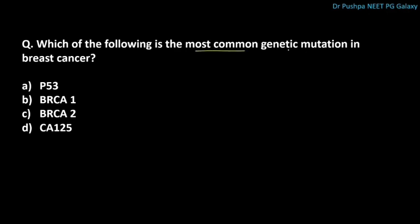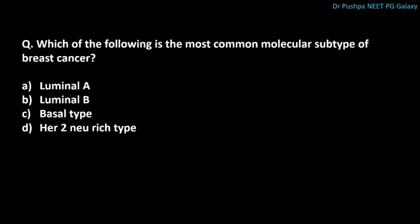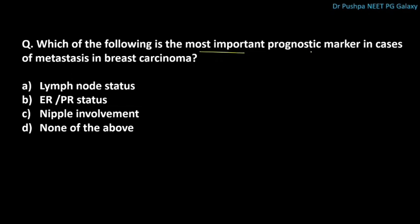What is the most common genetic mutation in breast cancer? The correct answer is P53. The most common familial genetic mutation is BRCA1. What is the most common molecular subtype of breast cancer? The correct answer is luminal A type. What is the most important prognostic marker in cases of metastasis in breast carcinoma? The correct answer is ER/PR status. Overall, the most important prognostic marker is lymph node status.